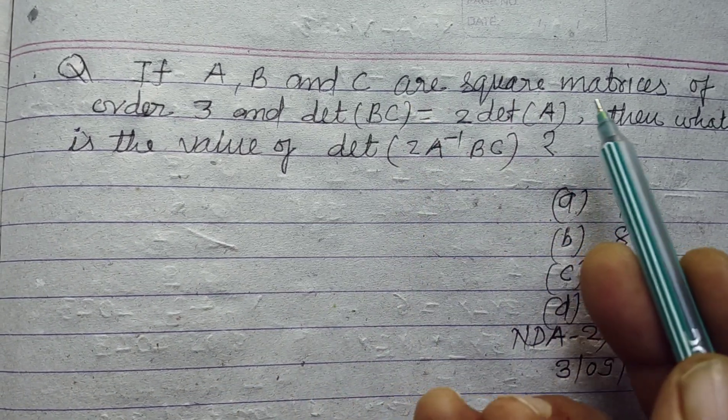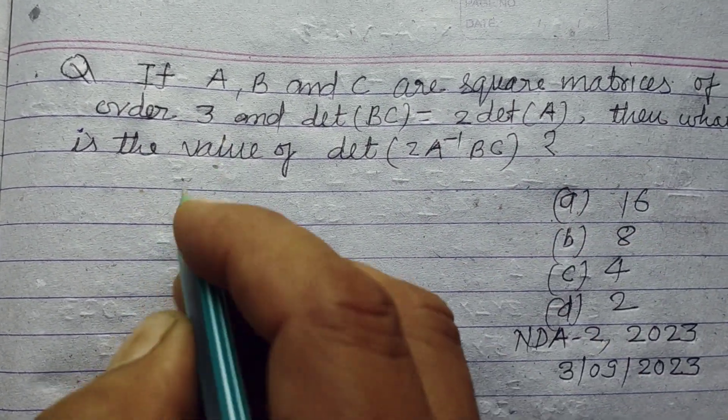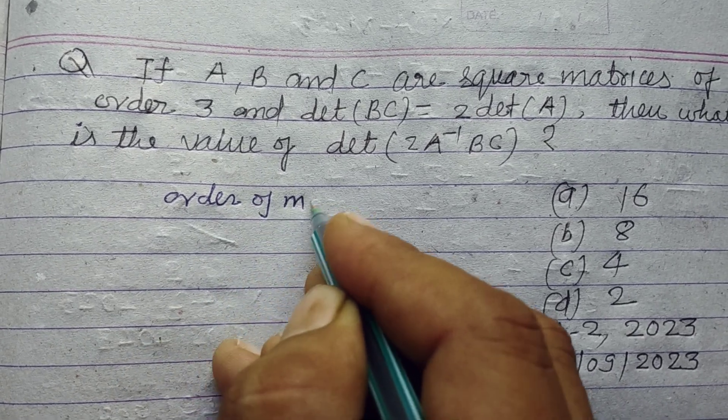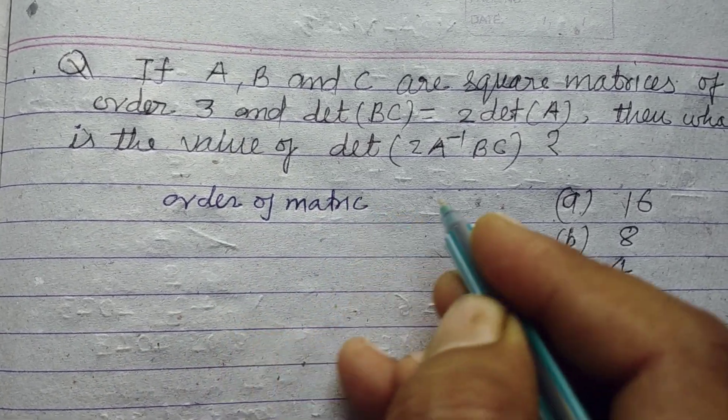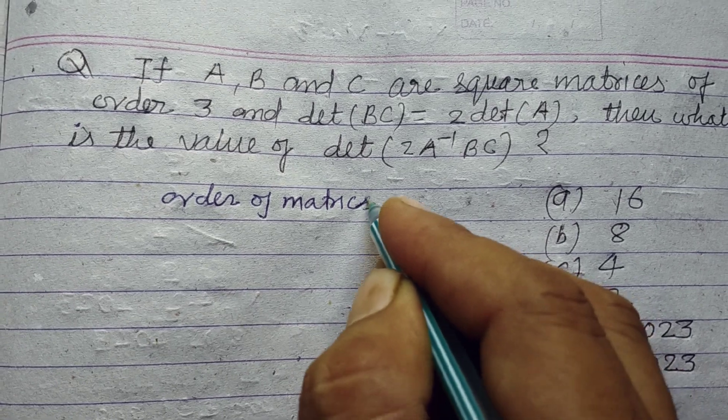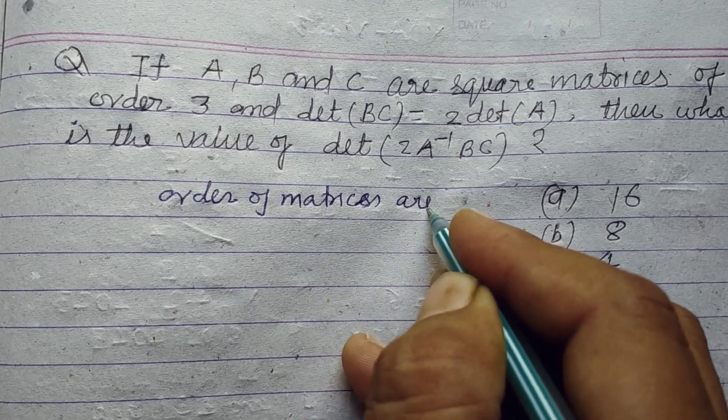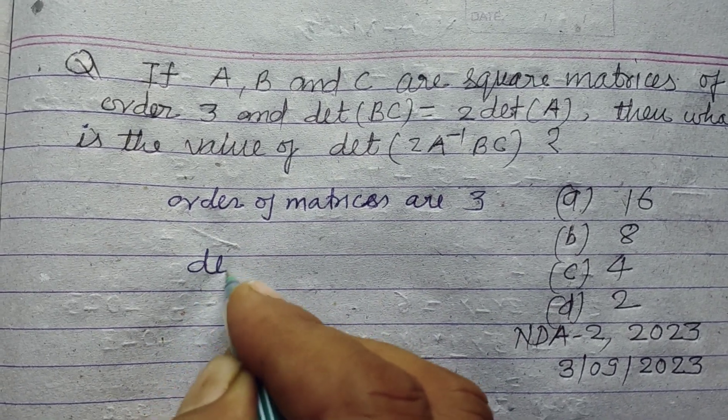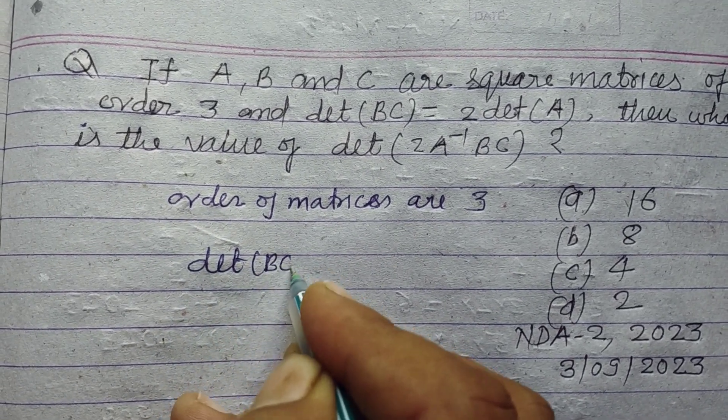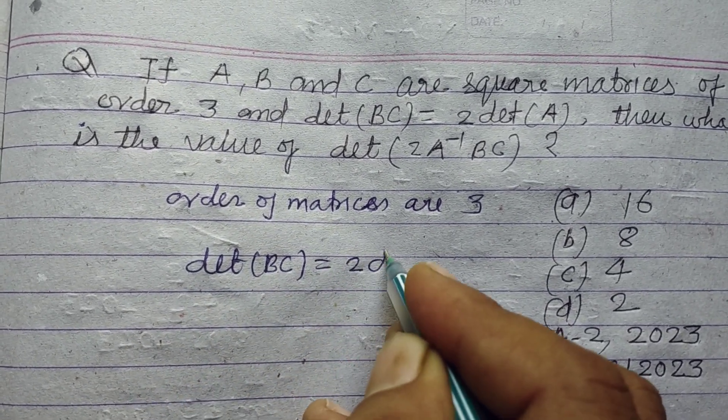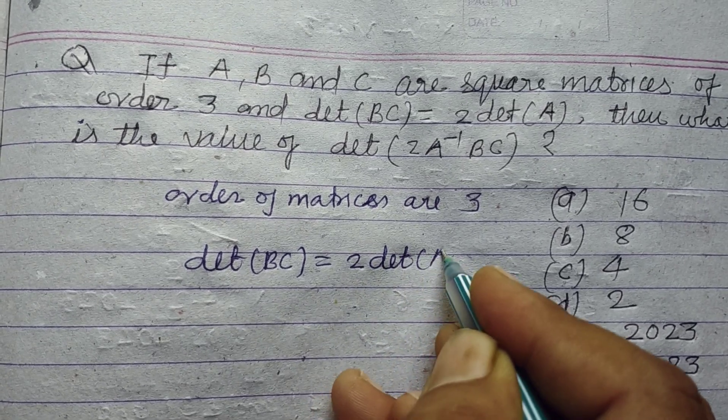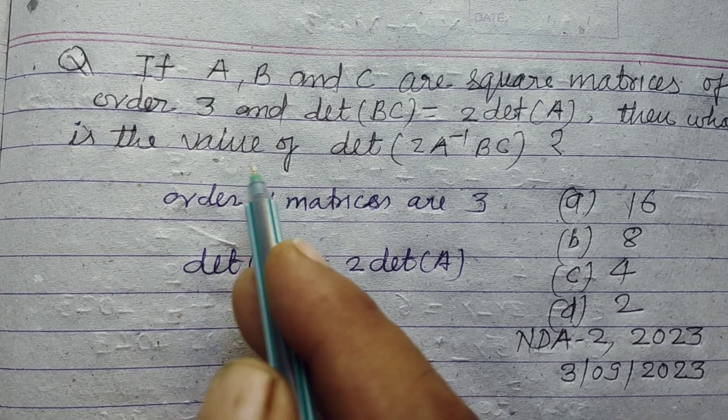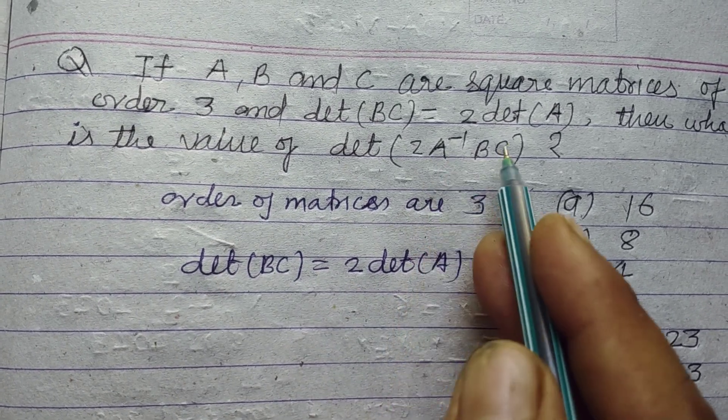If A, B, and C are square matrices of order 3, and determinant of BC equals 2 times determinant of A, then what is the value of determinant of 2A inverse BC?